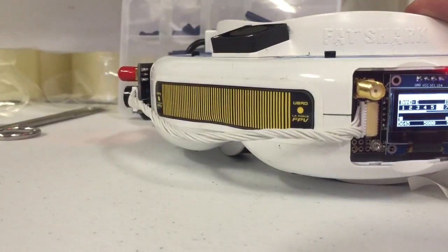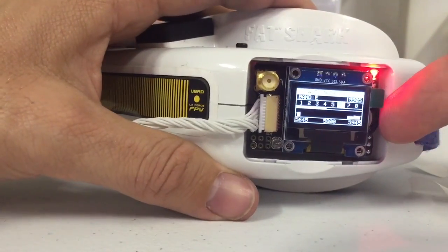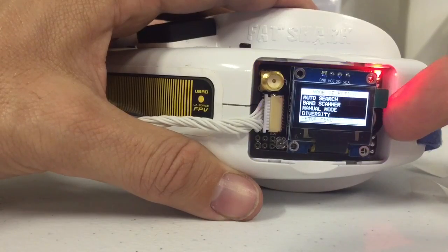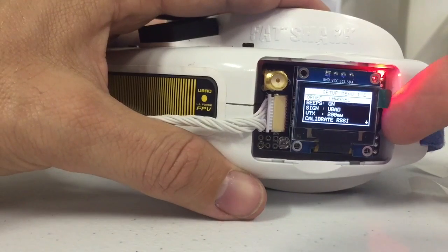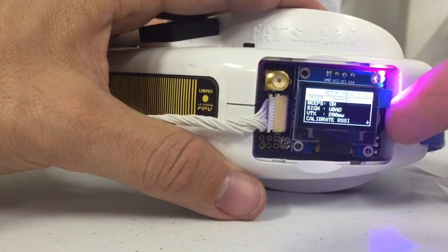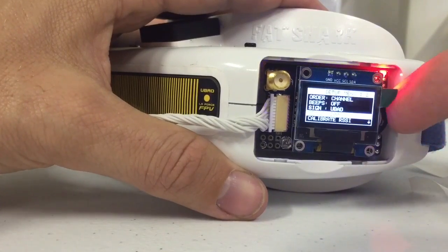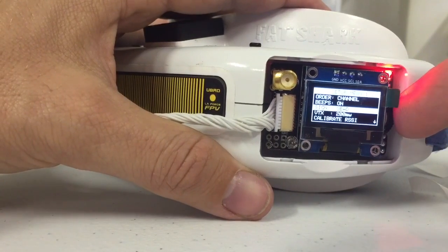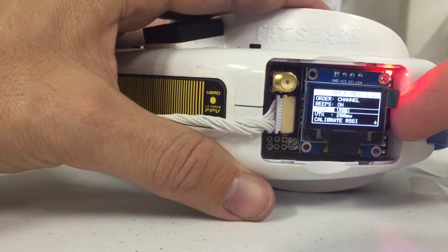So once you get into the module, you're going to have the menu system, which is just going to be pushing in the button. That'll take you to your menu. If you go down to setup, you're going to notice you have, you can organize it by how you want the frequency or the channel. You can turn the beeper off. Now there's no beep. Turn it on.